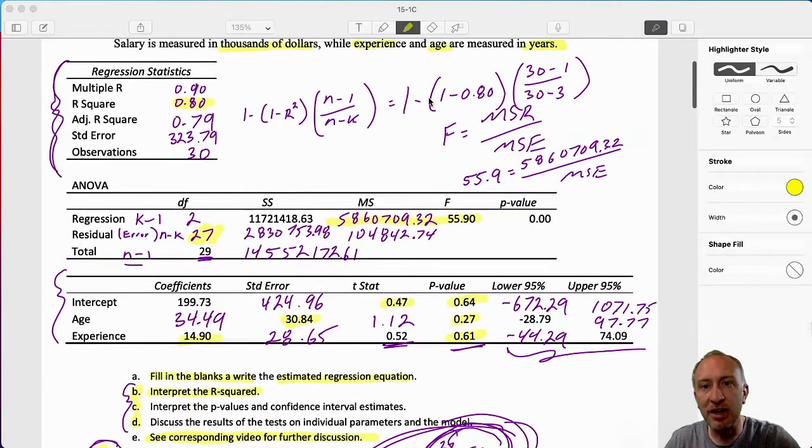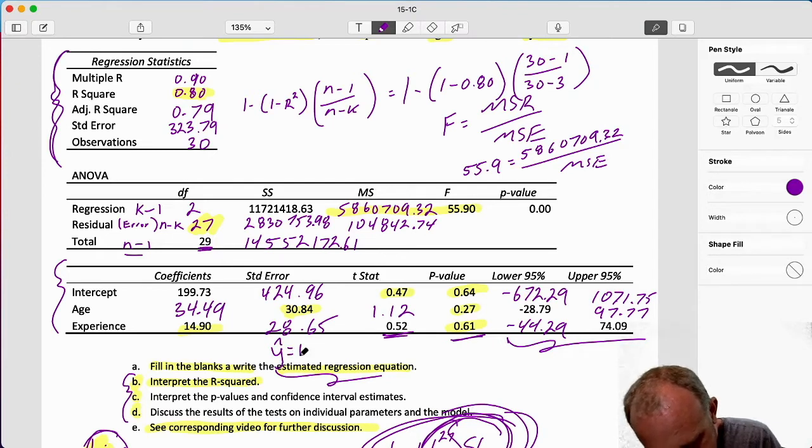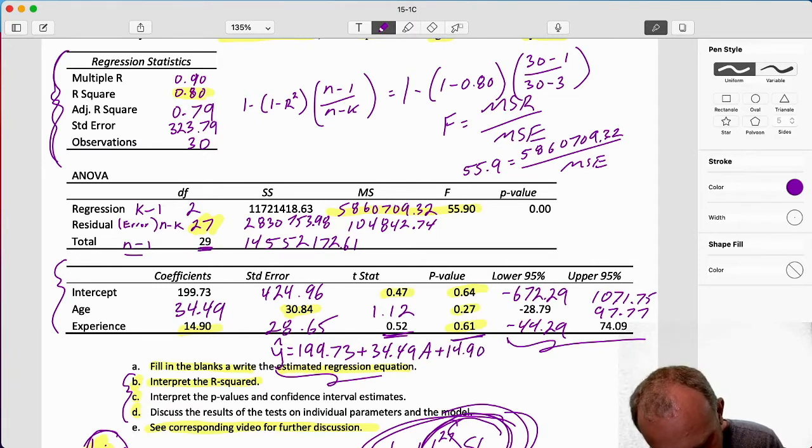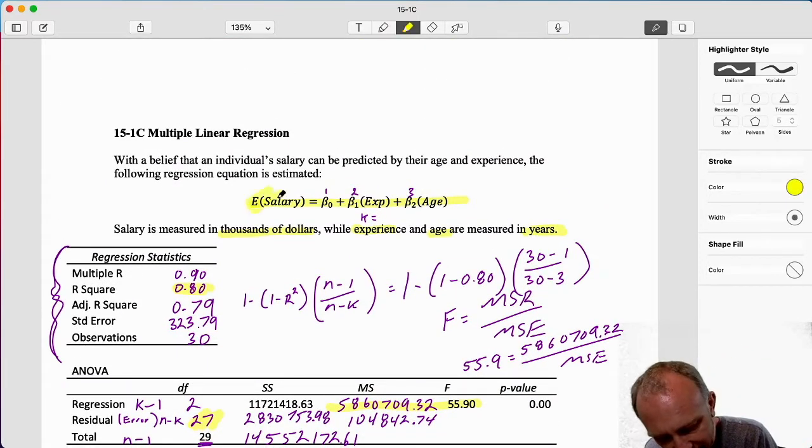And that brought us down to having our estimated regression equation, which we have here is y hat equal to 199.73 plus 34.49 age plus 14.9 experience. So that was our estimated regression equation that relates a person's salary to how many years of experience they have and how old are they.